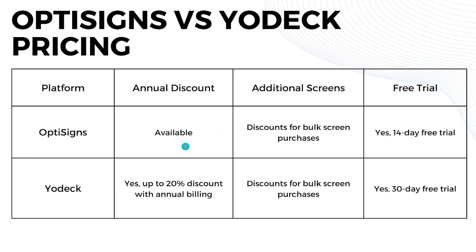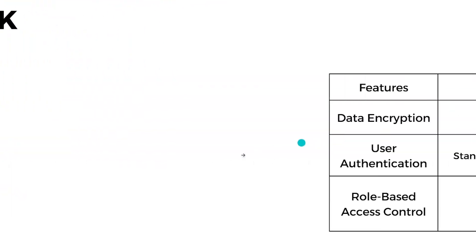OptiSigns offers an annual discount, and Yodeck specifically offers up to 20% discount with annual billing. Both platforms also offer discounts for additional screen purchases. For free trials, OptiSigns offers 14 days while Yodeck offers 30 days, which is longer.